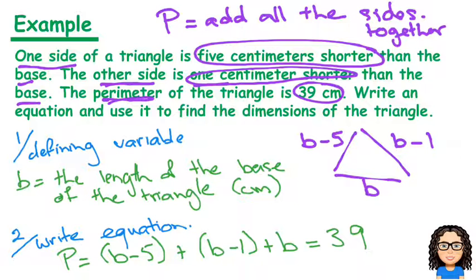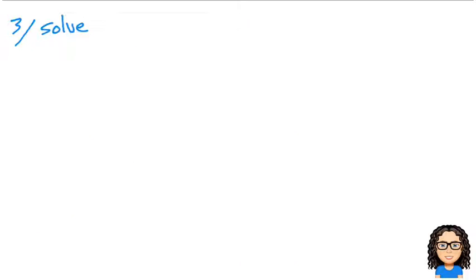That's writing the equation. Our third step is to solve. When I solve this, let me write that out again: P = (b - 5) + (b - 1) + b = 39.